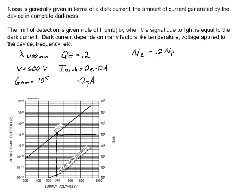And we know that the limit of detection, our dark current I_D, is equal to 2 times 10 to the minus 12 amps. And then if we divide this by the charge on an electron, 1.6 times 10 to the minus 19 coulombs, we find out that the number of electrons from our dark current is equal to 1.25 times 10 to the seventh electrons per second.